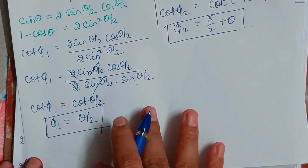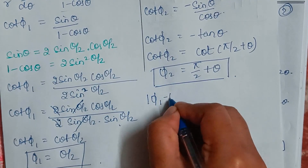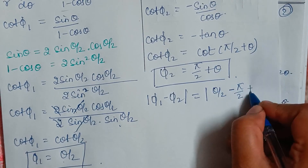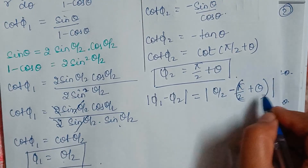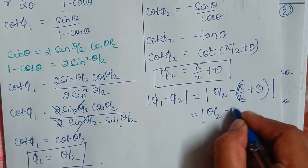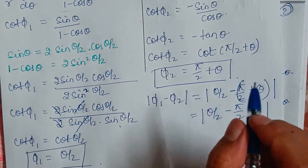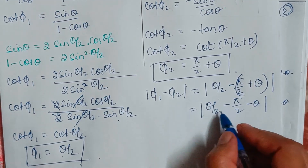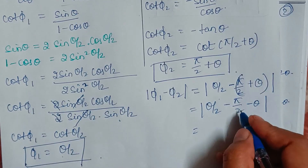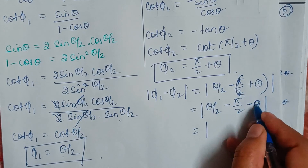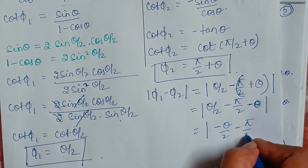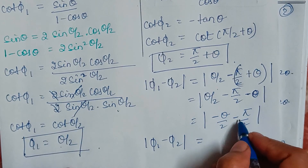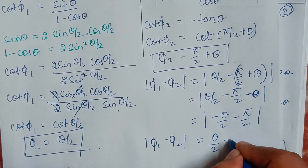To find the angle of intersection: angle of intersection equals modulus of φ₁ minus φ₂, where φ₁ is θ/2 and φ₂ is π/2 plus theta. So this gives modulus of θ/2 minus π/2 minus theta. Simplifying: 1 minus one-half gives minus θ/2 minus π/2. Removing the modulus, minus into minus removes the sign, so we get θ/2 plus π/2 as the angle of intersection.